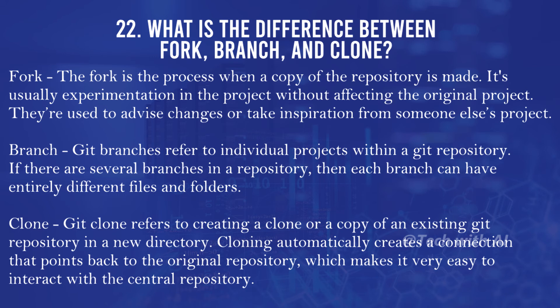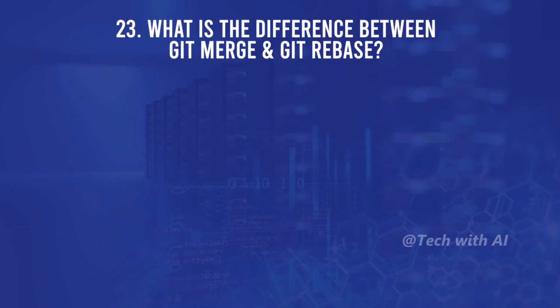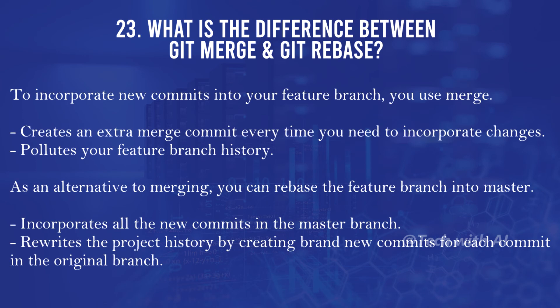What is the difference between git merge and git rebase? To incorporate new commits into your feature branch using merge, it creates an extra merge commit every time you need to incorporate changes, which pollutes your feature branch history. As an alternative, you can rebase the feature branch into master, which incorporates all the new commits in the master branch and rewrites the project history by creating brand new commits for each commit in the original branch.